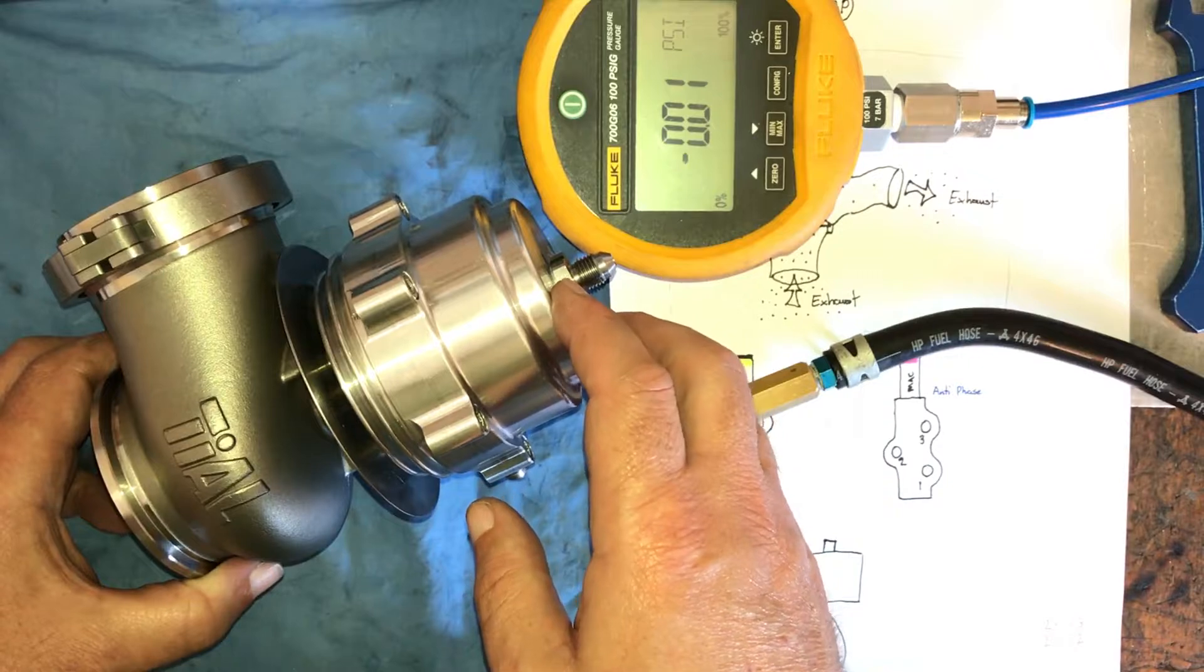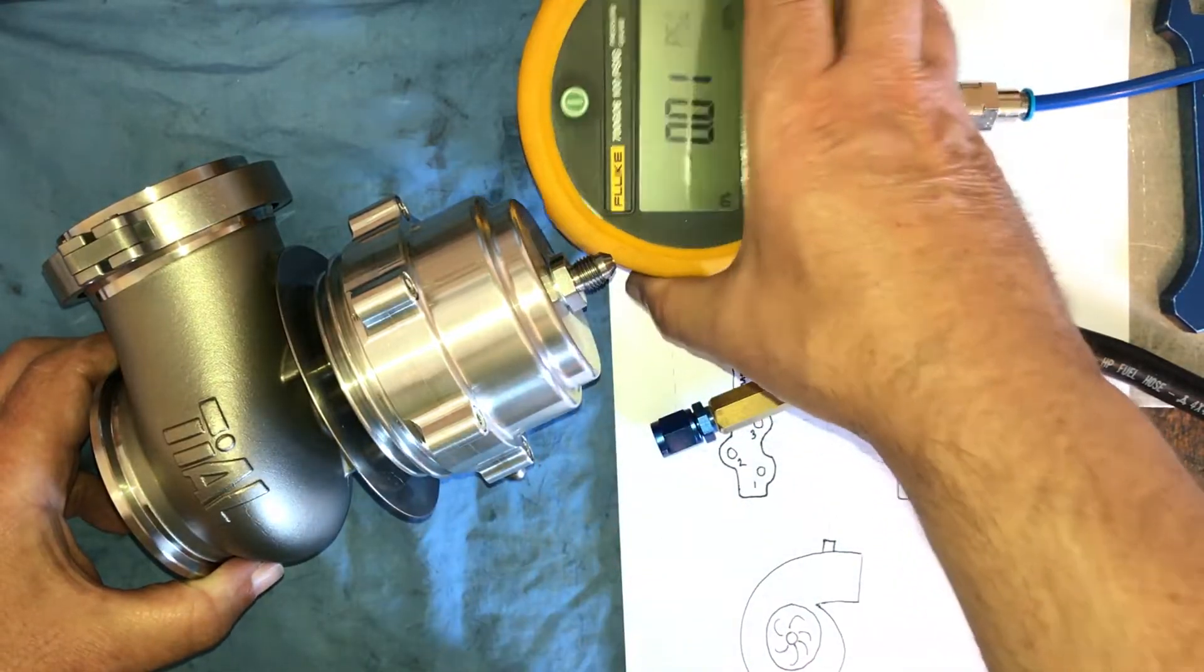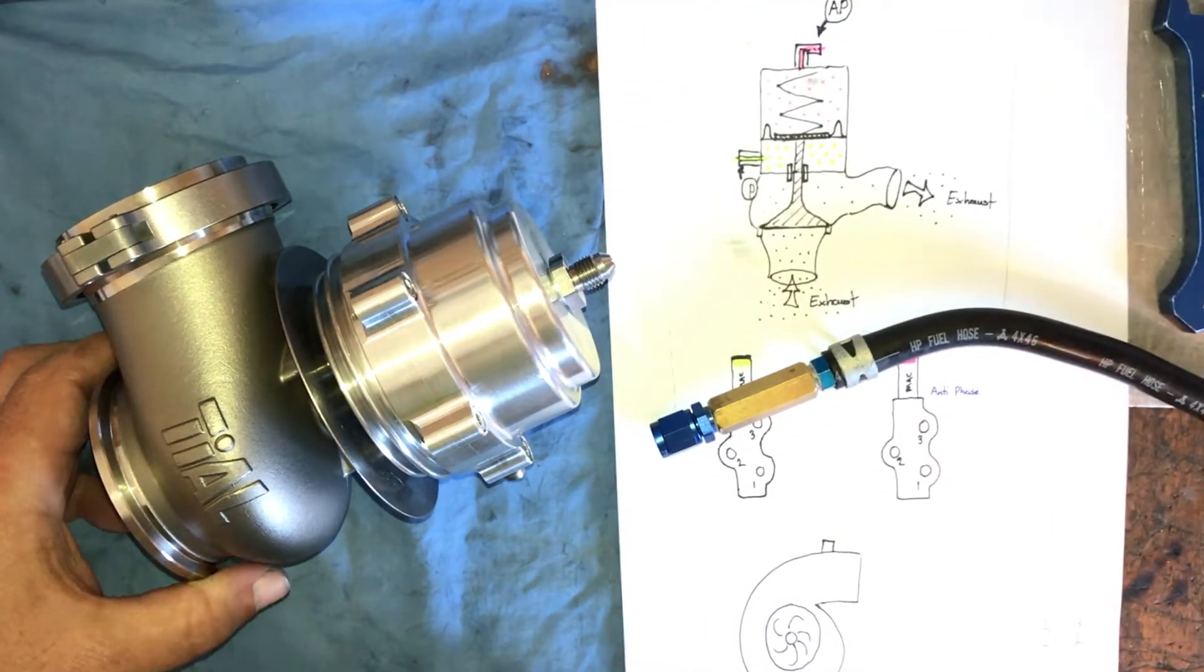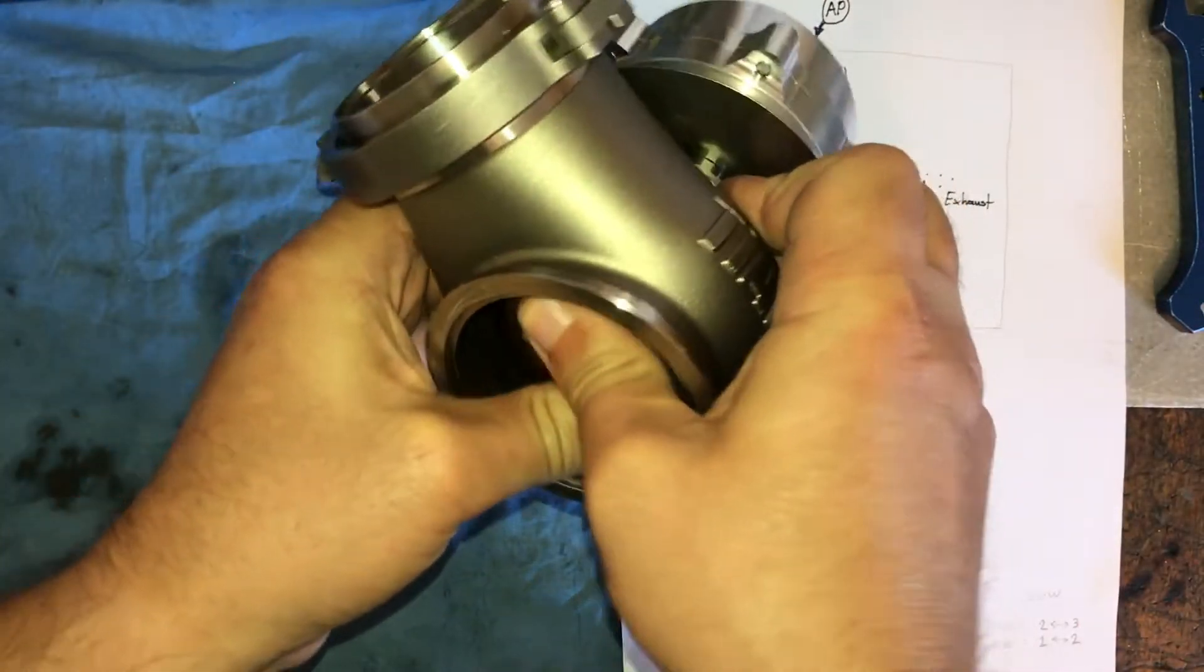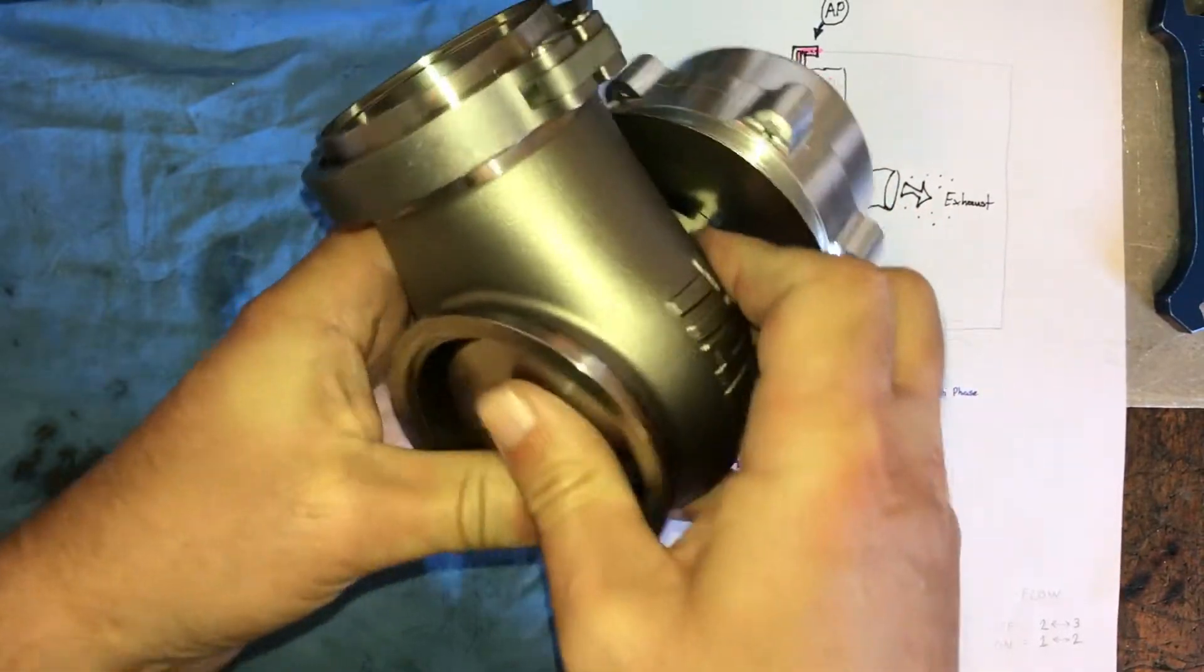What we have is our wastegate that we've prepared with our 5.4 psi base spring pressure or base spring fitted inside it. You can see that it's relatively very easy to open up the valve with your thumbs. You don't have to be a he-man to do it.